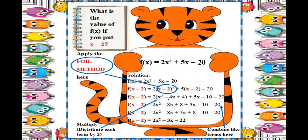After FOIL, combine like terms. Then distribute the coefficient 2: 2 times x squared is 2x squared, 2 times negative 4x is negative 8x, and 2 times positive 4 is positive 8. Then for the 5x term: 5 times x is 5x, and positive 5 times negative 2 is negative 10. Copy the minus 20 at the end.